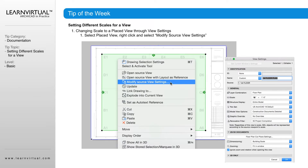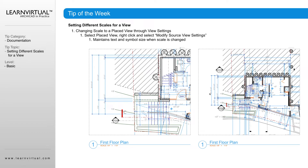We can then come in and edit the saved view information. Doing it this way maintains our text and symbol size when the scale is changed. So looking at the difference here, on the left-hand side we have the first floor plan view at a quarter inch, and then we have that same view at an eighth of an inch — same view, different scales — and we can see that our text scaled with our project.